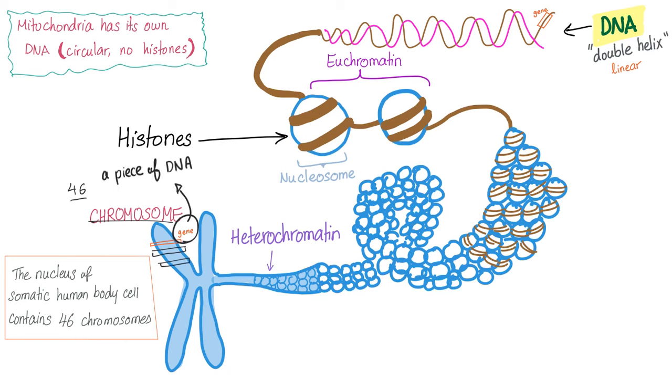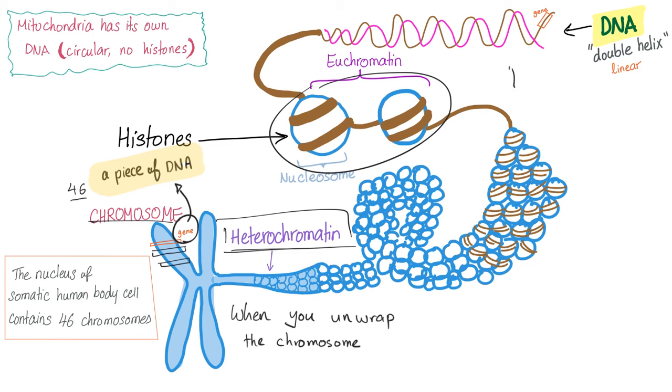Each chromosome has segments. These segments are called genes. Each gene is, if you just unwrap them, you will find heterochromatin like this, and then you will find this euchromatin, as we have mentioned before. And then this euchromatin has the famous double helix, which we call the DNA, the deoxyribonucleic acid.